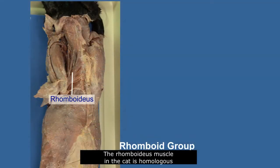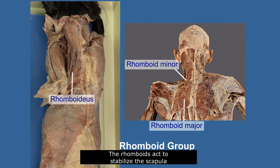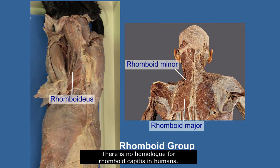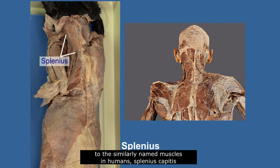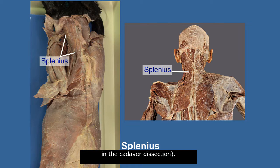The rhomboideus muscle in the cat is homologous to the rhomboid major and the rhomboid minor in humans. The rhomboids act to stabilize the scapula in both cats and in humans. There is no homologue for rhomboid capitus in humans. The splenius muscle is homologous to the similarly named muscles in humans — splenius capitus and splenius cervicis. Splenius cervicis is not shown in the cadaver dissection.